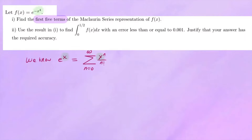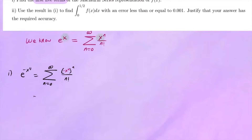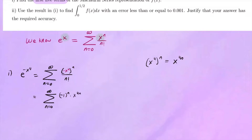So for the first part, e to the negative x to the 4th is going to be the sum starting from n equals 0 to infinity of x to the n over n factorial, where we replace x with negative x to the 4th. Then we simply simplify that. So this will be the sum from n equals 0 to infinity of negative 1 to the n times x to the 4n, all over n factorial.